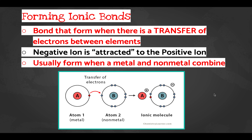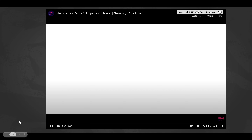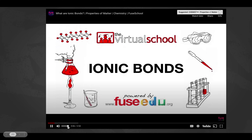Forming ionic bonds: a bond that forms when there is a transfer of electrons between elements. One element gave its electrons to another — one became positive, one became negative — and the negative ion is attracted to the positive ion, forming a compound. Ionic bonds usually form when a metal and a non-metal combine.